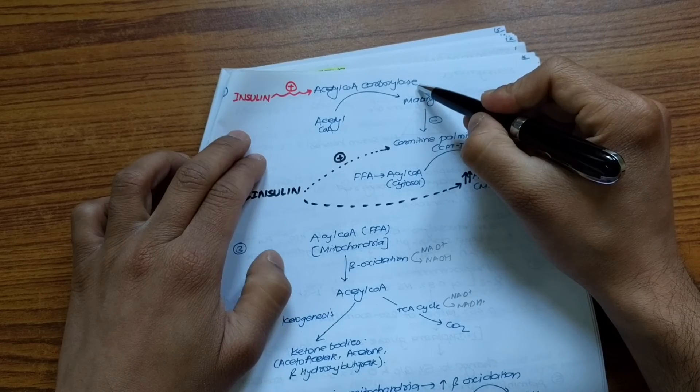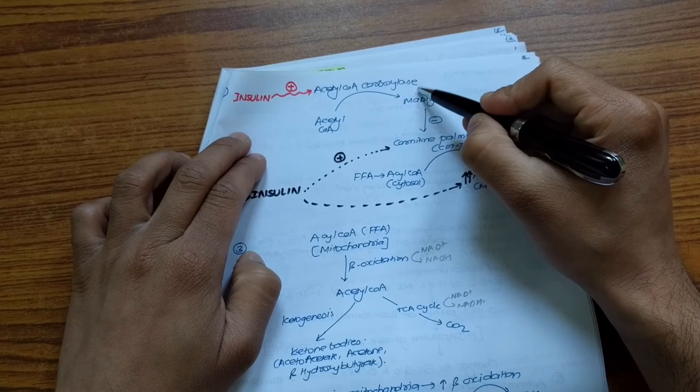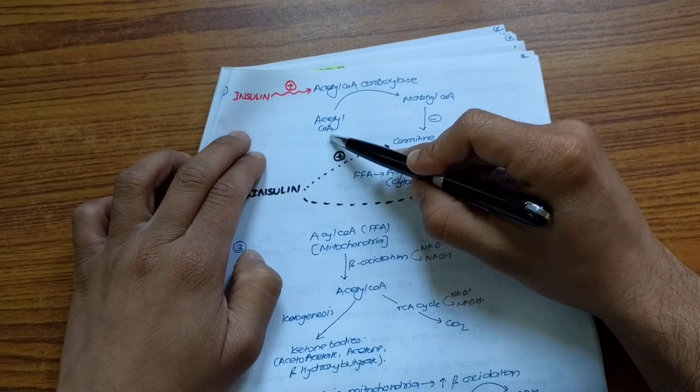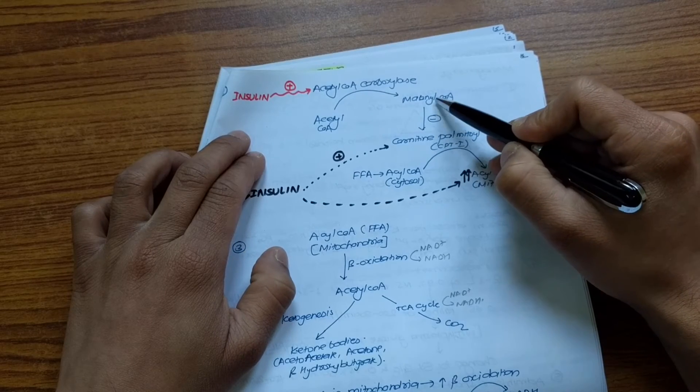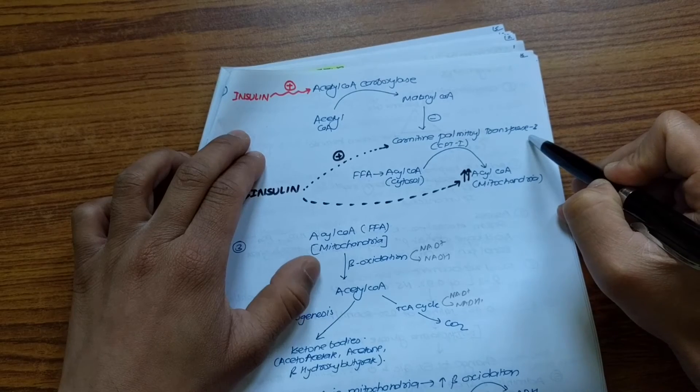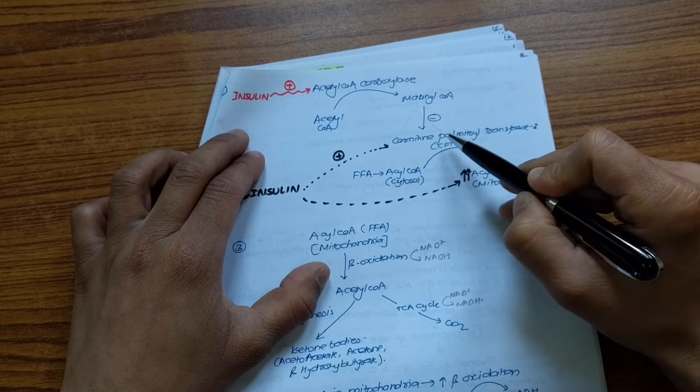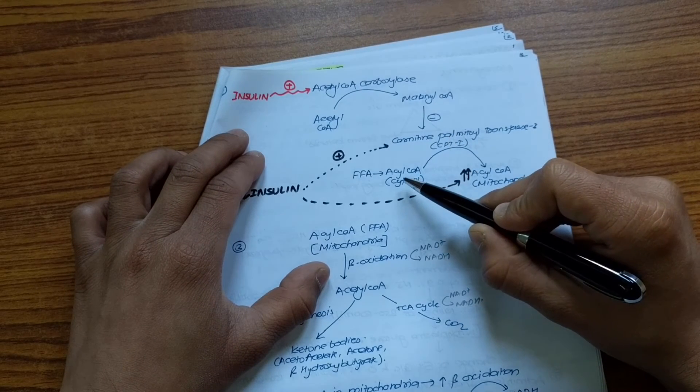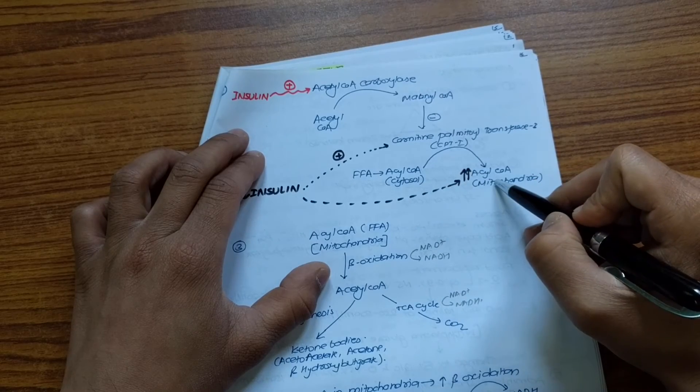Here is the other enzyme called acetyl-CoA carboxylase. The function of acetyl-CoA carboxylase is to convert acetyl-CoA into malonyl-CoA. The malonyl-CoA will inhibit the enzyme carnitine palmitoyl transferase-1, also known as CPT-1. The job of CPT-1 is to translocate acetyl-CoA from cytosol to mitochondria.